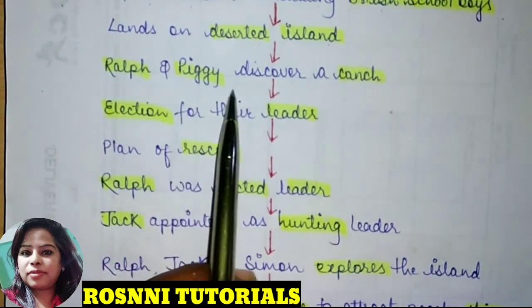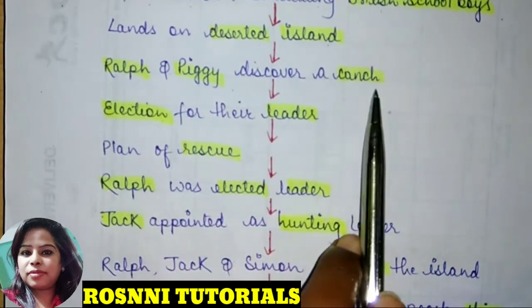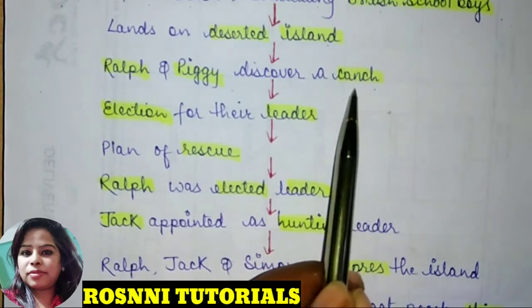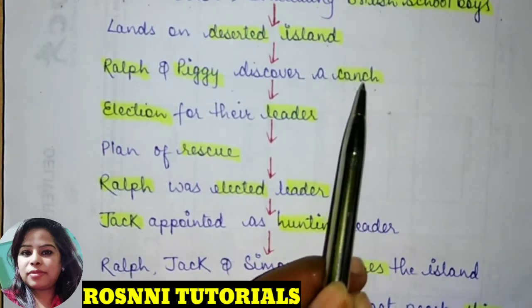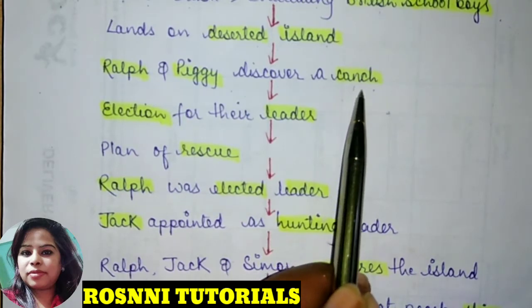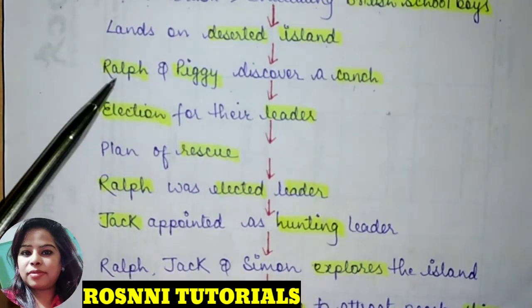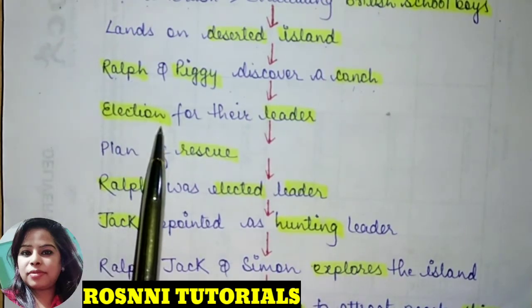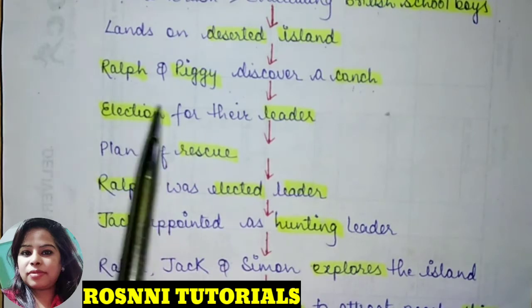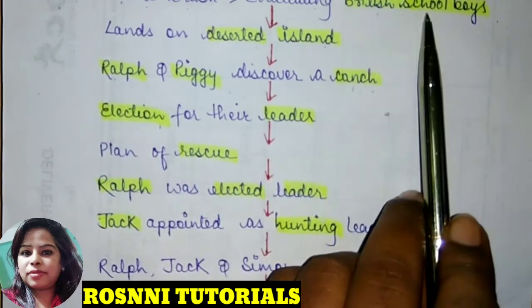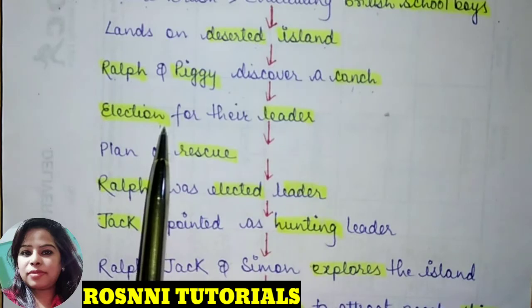Ralph and Piggy discovered a conch, which they used as a horn to call the boys and assemble them. In order to survive on the island, Ralph called for an election, and all the British school boys had to choose their leader.